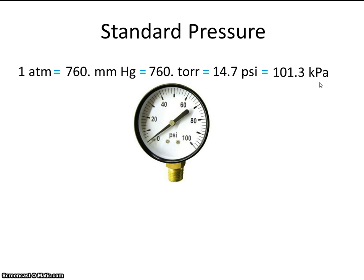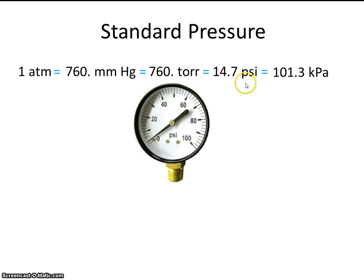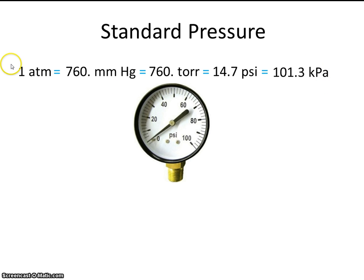We'll be using all of these units, but keep in mind that each one of these is equal to each other. So 1 atmosphere is equal to 14.7 psi, 760 millimeters of mercury, and 101.3 kilopascals. These are all the same amount of pressure, just measured in different units.